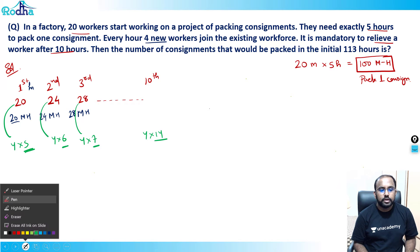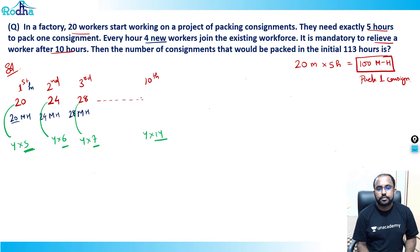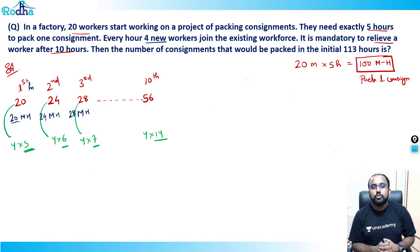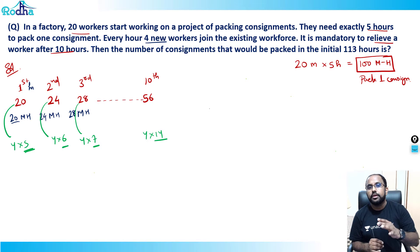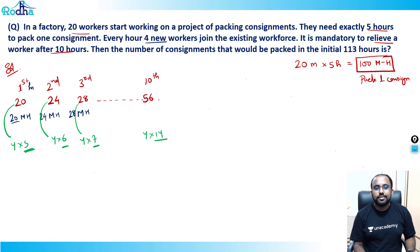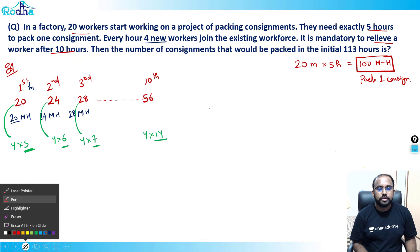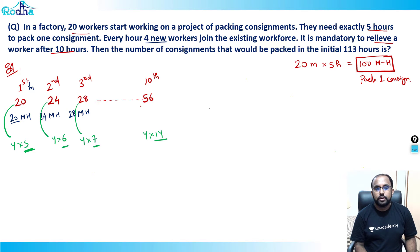In the 10th hour, 4×14 = 56 people are present. These 56 people work for one hour, so 56 man-hours of work is done in the 10th hour.